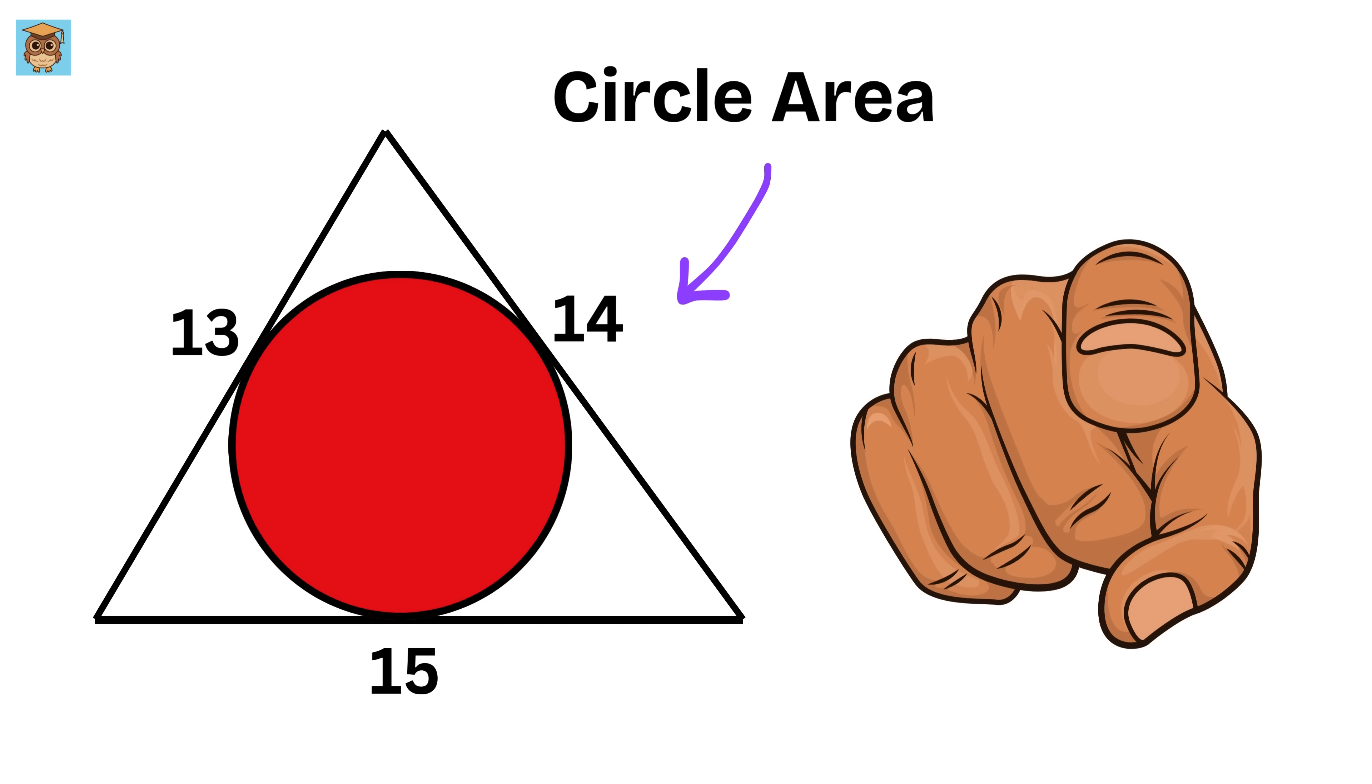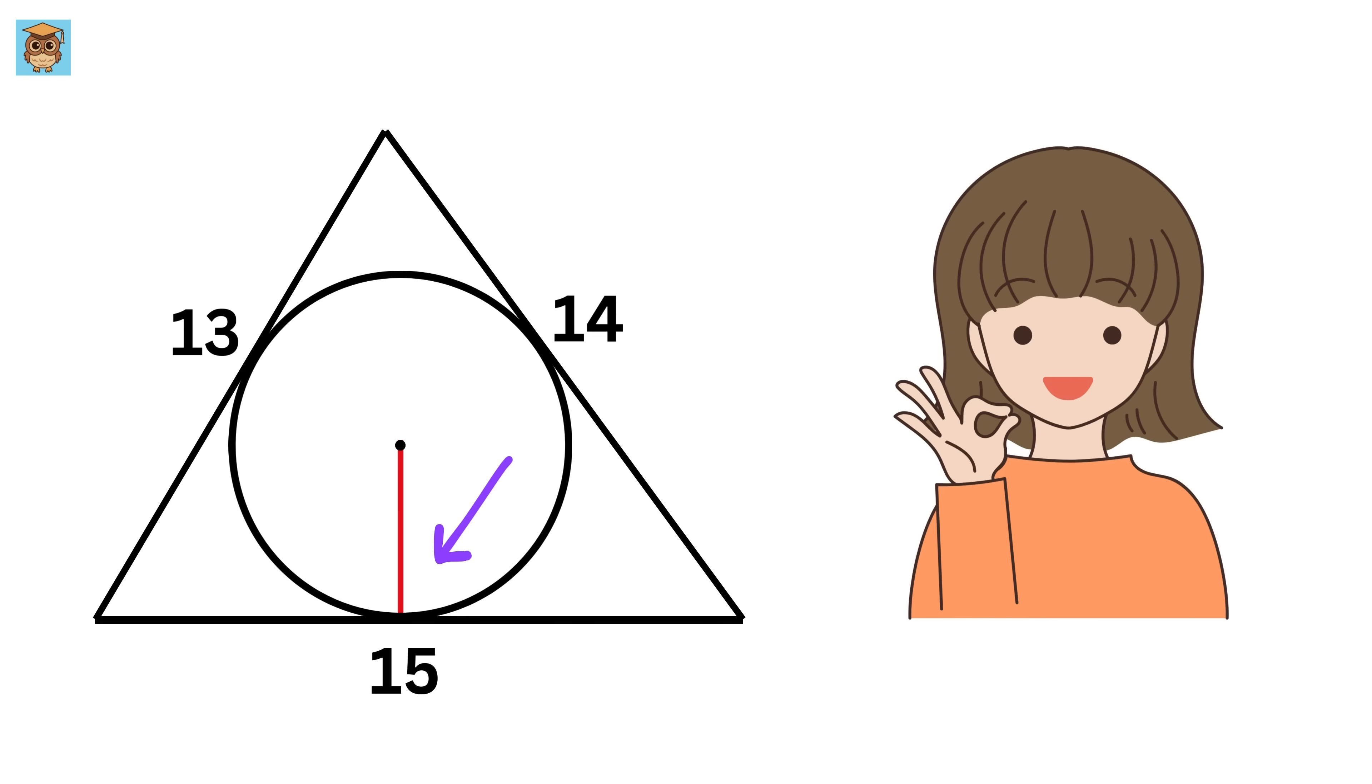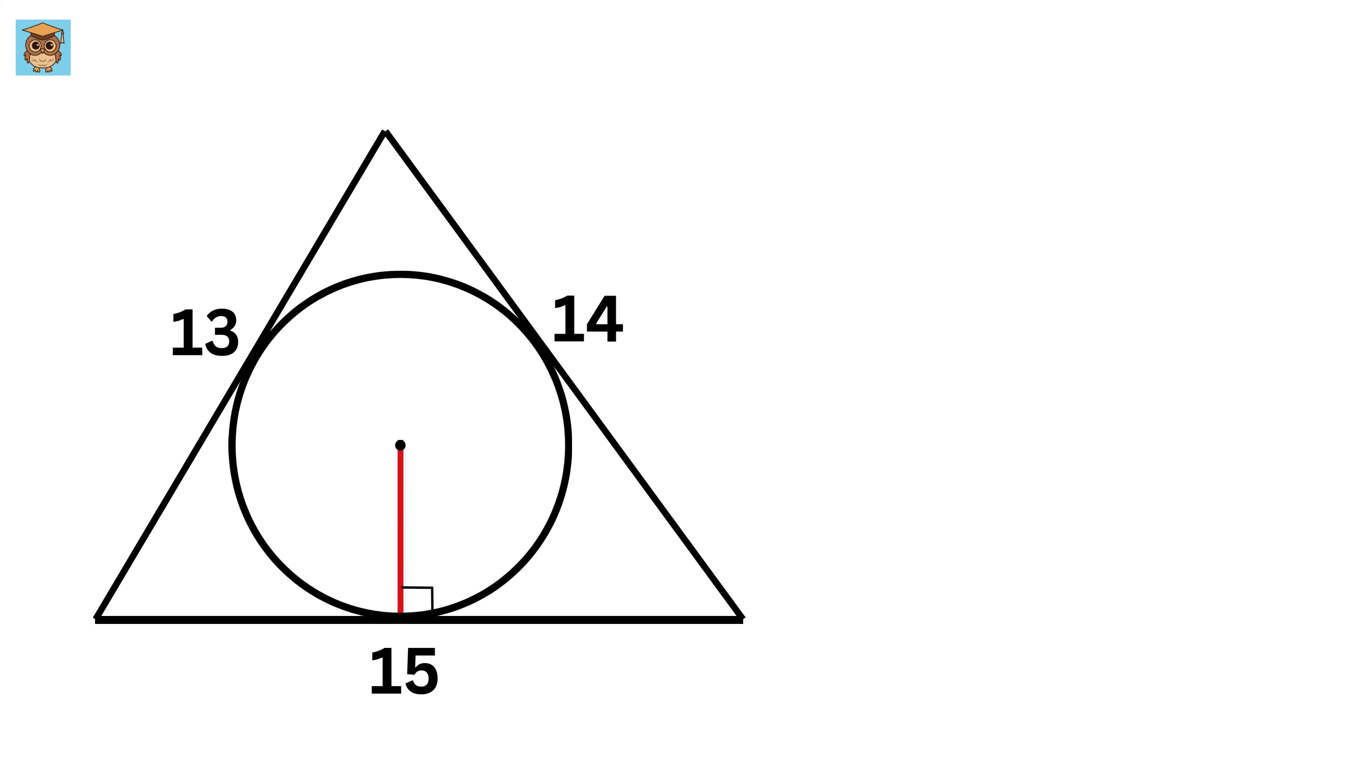So, can you solve it? Okay, as a first step, let us draw this line which will be the radius of this circle. Now tell me, what will be this angle? Yes, you are right. It will be a right angle. This is because we know that the radius of a circle is always perpendicular to the tangent line.